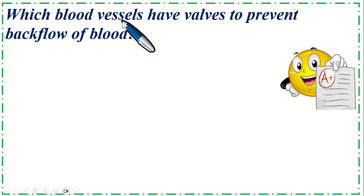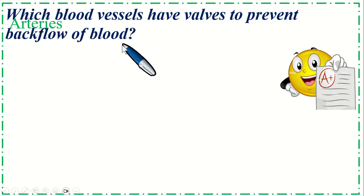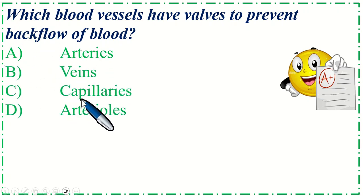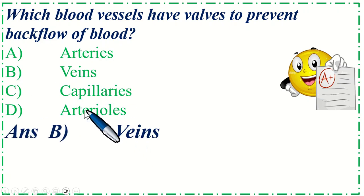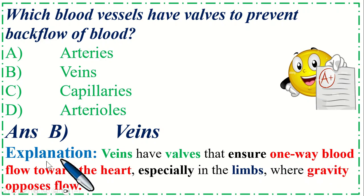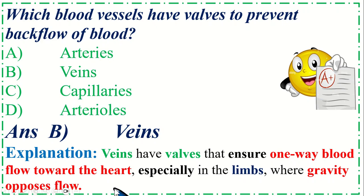Which blood vessels have valves to prevent backflow of blood? Option A: Arteries, B: Veins, C: Capillaries, and Option D: Arterioles. The correct option is B, Veins. Veins have valves that ensure one-way blood flow toward the heart, especially in the limbs where gravity opposes flow.